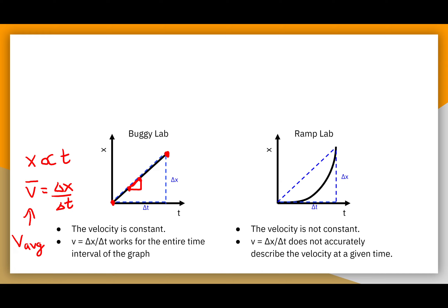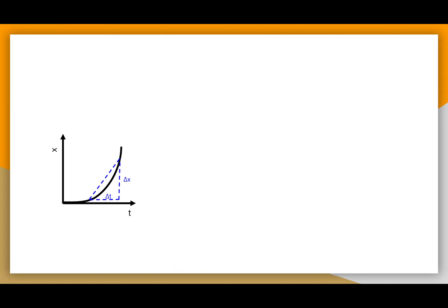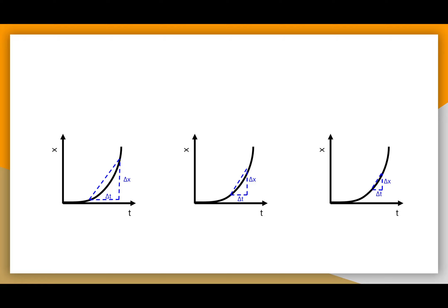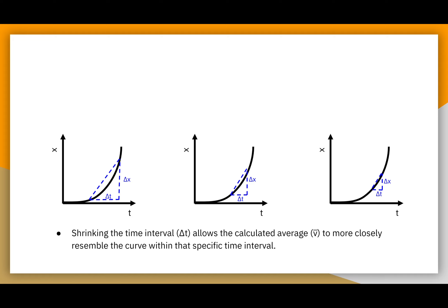That will not be true when we have a changing velocity, like in the ramp lab. The way we can get a better understanding of velocity at any given instance is by choosing two points not at the beginning and end of our data range, but somewhere in between. The slope of the line connecting those two points does a better job of approximating the slope in that region. We can do better by choosing two points even closer together, continuing that trend until the line connecting them is virtually indistinguishable from the curve itself.